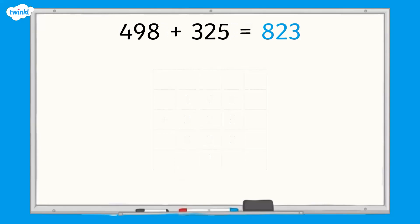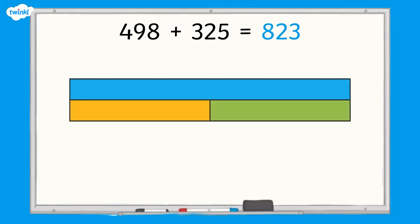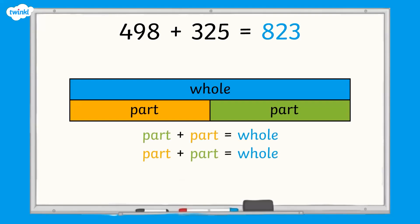We can show the calculation in a bar model. In a bar model, we have the whole and we have the parts. The parts added together equal the whole, so part add part equals whole.